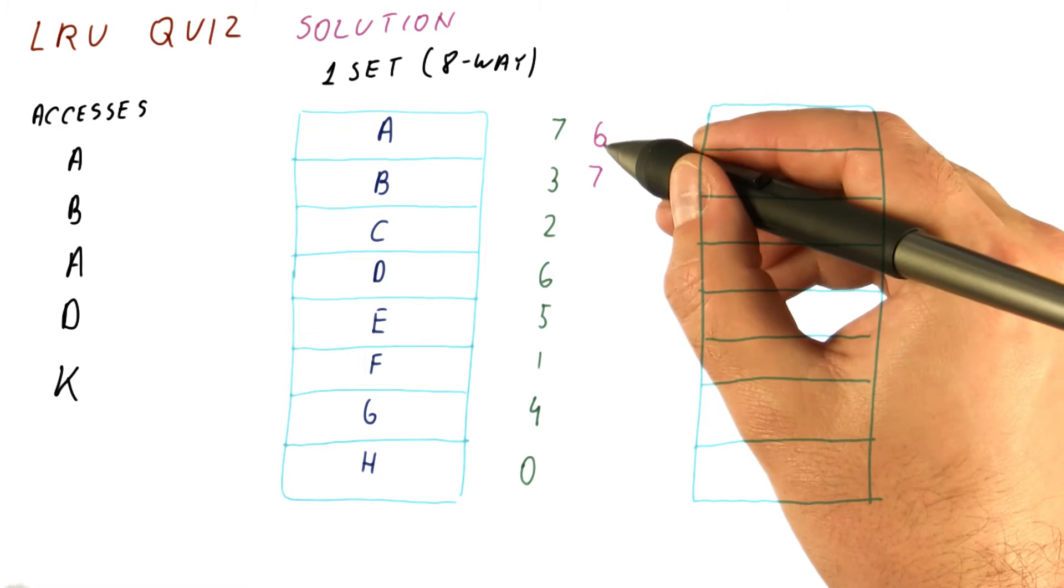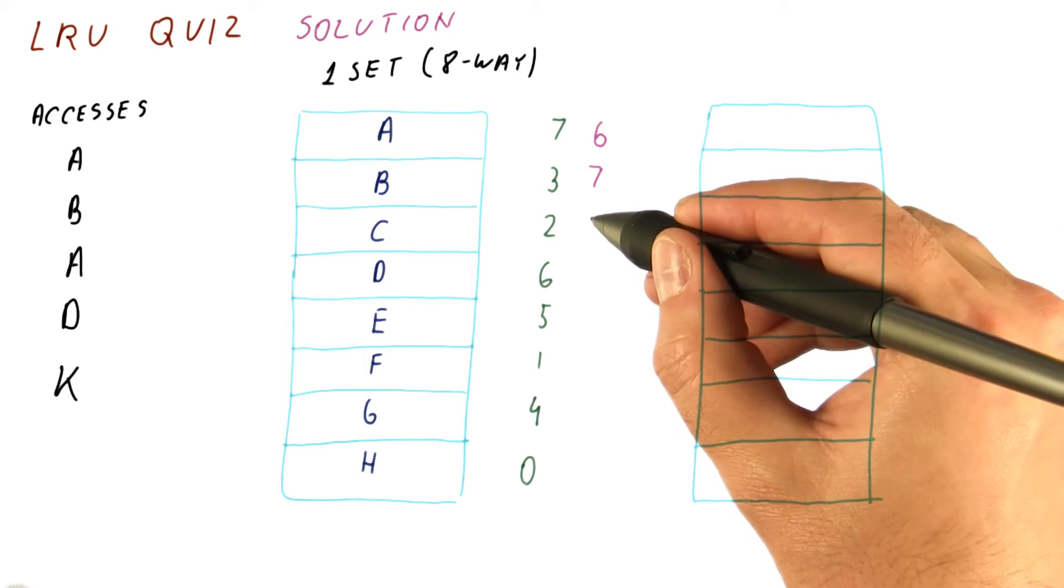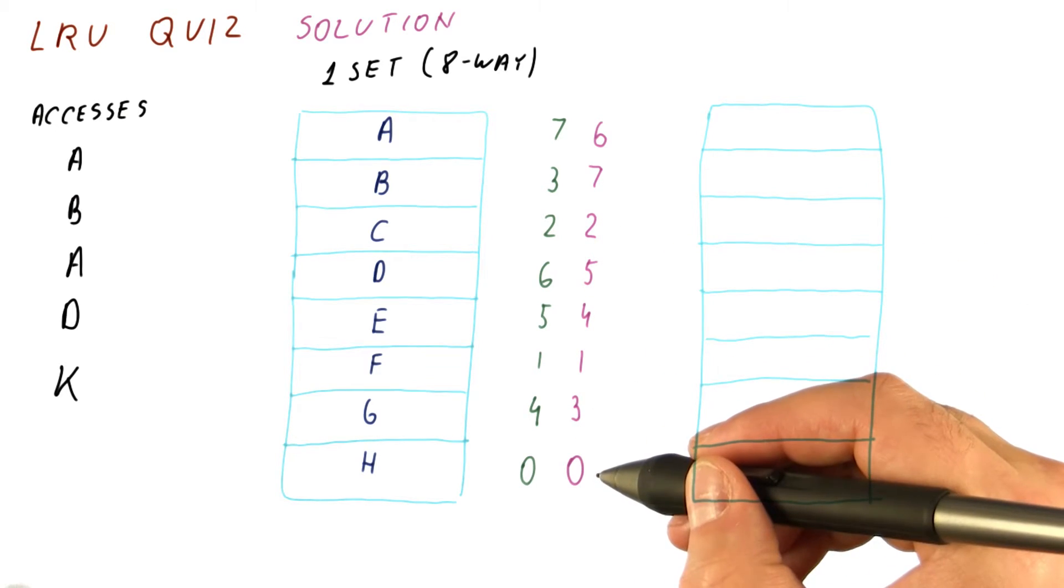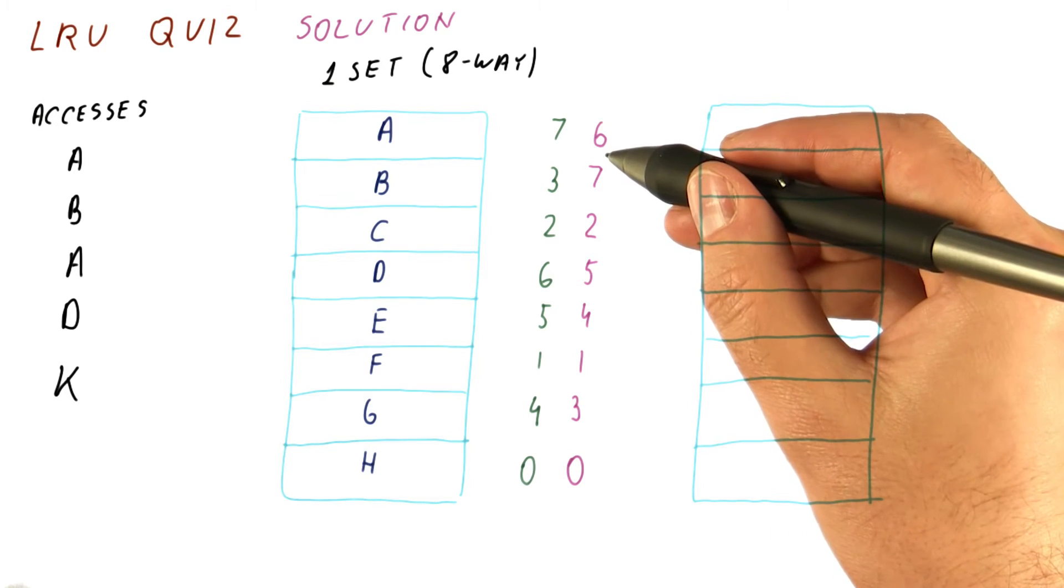That means that all the counters above 3 will be decremented. 2 stays the same, 1 stays the same, and 0 stays the same. So these are the new counters after B is accessed.